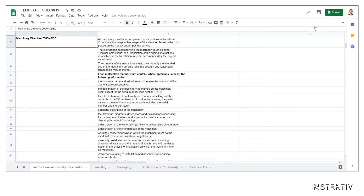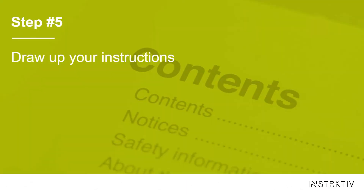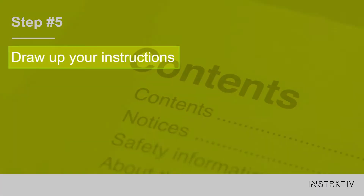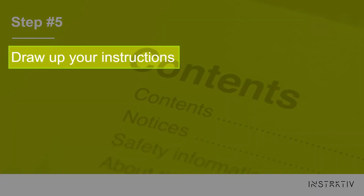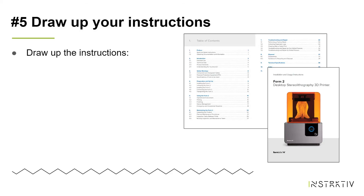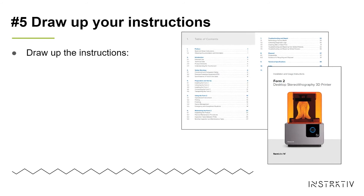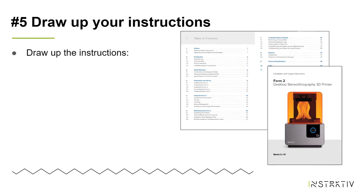This is how your spreadsheet may look like. In step 5 we're going to draw up the instructions. This is where the actual technical writing comes in. As you've just determined what should be in your user instructions, now you can start creating them.